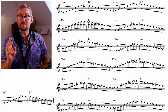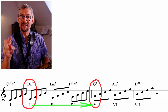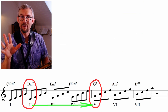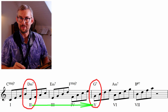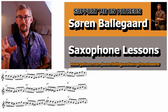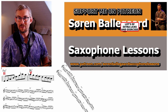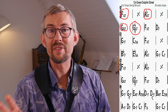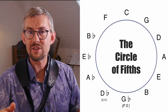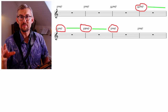The two-five lick is played over two bars, and now you're training both the two chord (the second degree) and the five chord (the fifth degree) — the subdominant and the dominant — in one lick. Go to the Patreon and find lots of these two-five licks in all 12 keys around the circle of fifths. Looking at Green Dolphin Street, there are other ways to move around the 12 keys, and you need to know these because they give great musical sense.